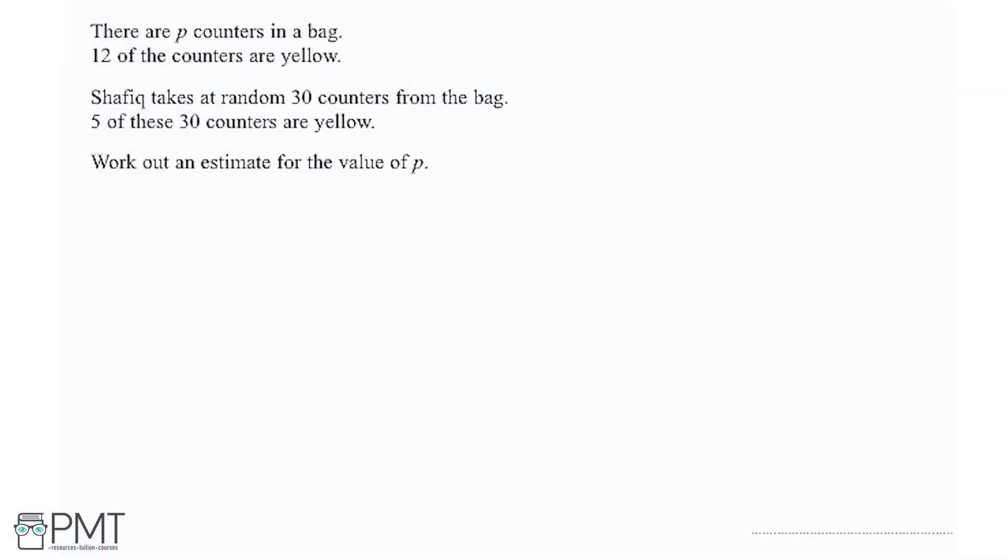There are p counters in a bag, 12 of the counters are yellow. Siasha takes 30 counters from the bag, 5 of these 30 counters are yellow, and we need to work out an estimate for the value of p.